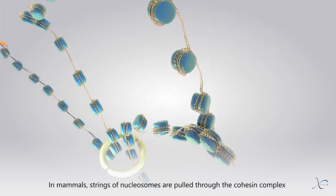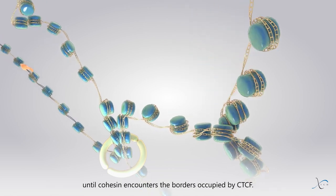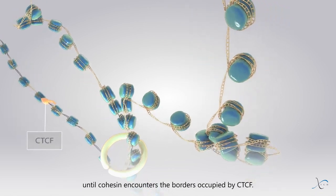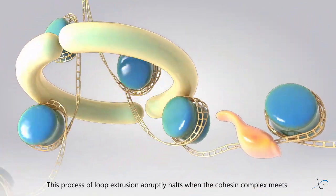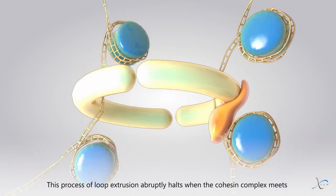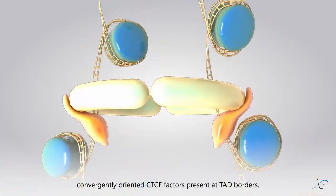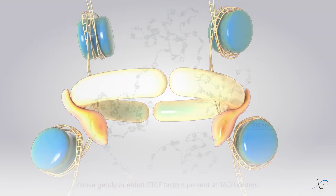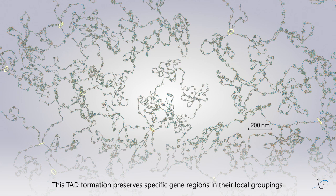In mammals, strings of nucleosomes are pulled through the cohesin complex until cohesin encounters the borders occupied by CTCF. This process of loop extrusion abruptly halts when the cohesin complex meets convergently oriented CTCF factors present at TAD borders. This TAD formation preserves specific gene regions in their local groupings.